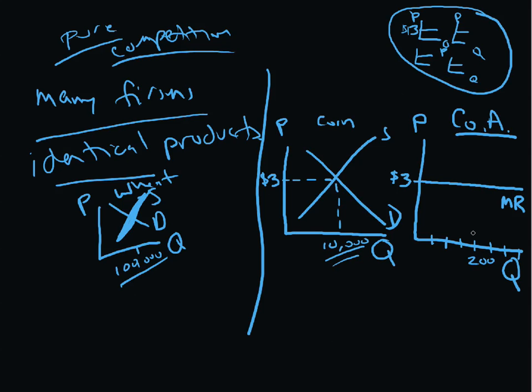So if this company makes 200 bushels of corn, you just simply multiply 200 times 3. And this rectangle here, it looks like a square, gives us the total revenue. So this is how this works in terms of revenue for a company in a pure competition model.